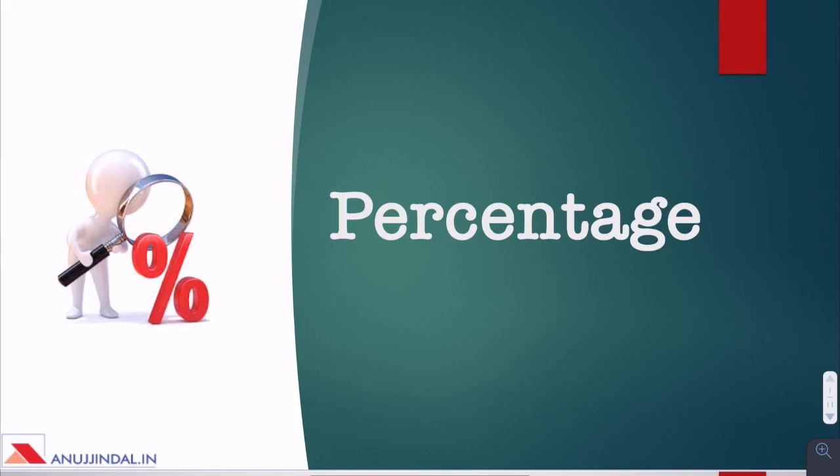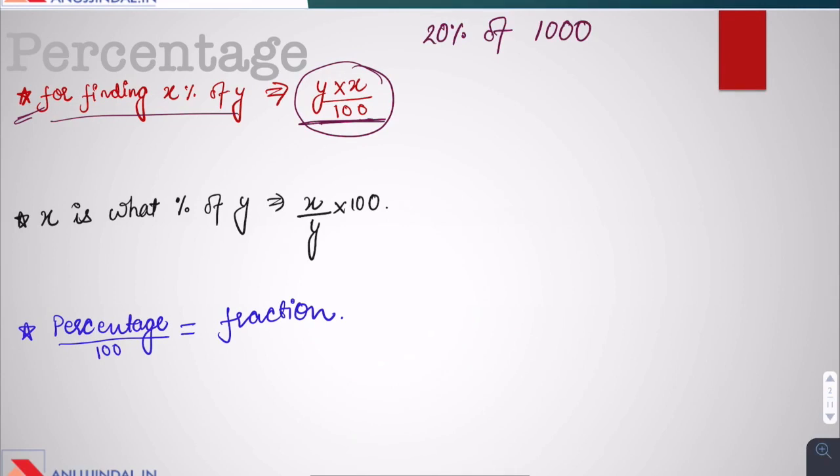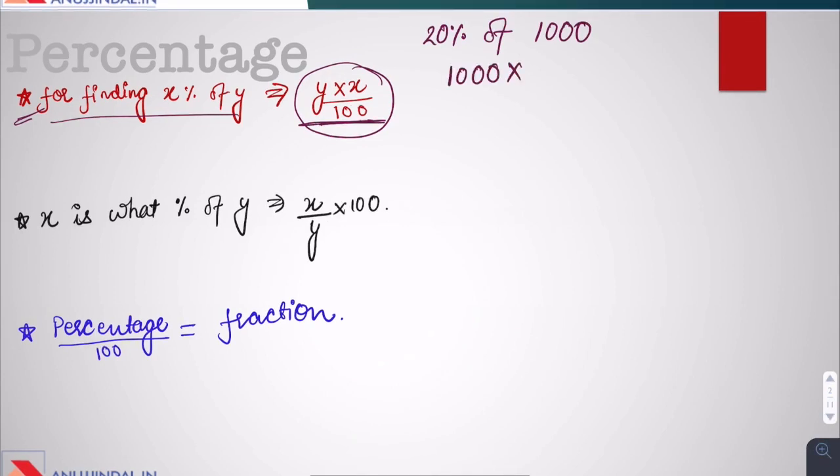Before getting started with the questions, let us quickly revise some basic concepts. First, for finding the x percentage of y, we multiply y by x and then divide it by 100. Suppose you have to find 20% of 1000, then 1000 multiplied by 20 by 100, which is 200, it is the 20% of 1000.